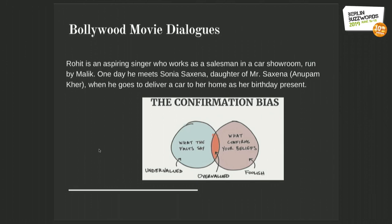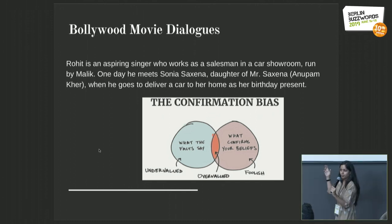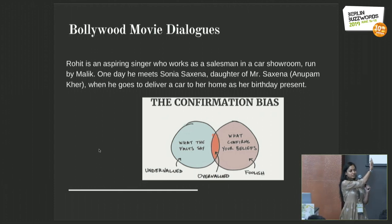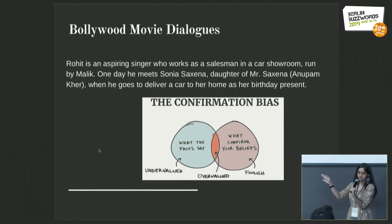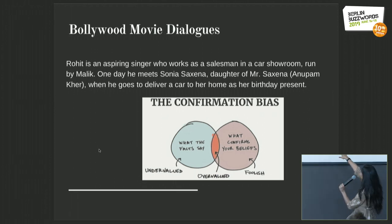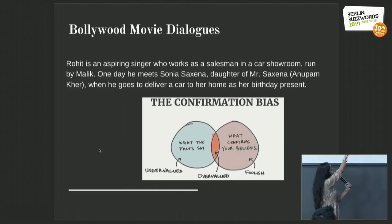In Bollywood movies, whatever characteristics we associate with a hero are not generally how we describe heroines. Consider this dialogue: 'Rohit is an aspiring singer who works as a salesman in a car showroom run by Mr. Malik. One day, he meets Sonia, daughter of Mr. Saxena, when he goes to deliver a car to her home as her birthday present.' What is the disparity here? Rohit has a long description — he's a salesman, wants to be a singer, delivers a car. But Sonia is simply described as 'daughter of Mr. Saxena.' There's no other description given about her.